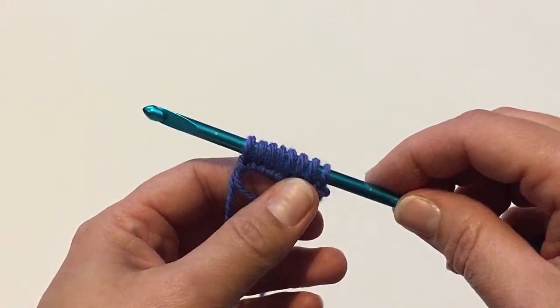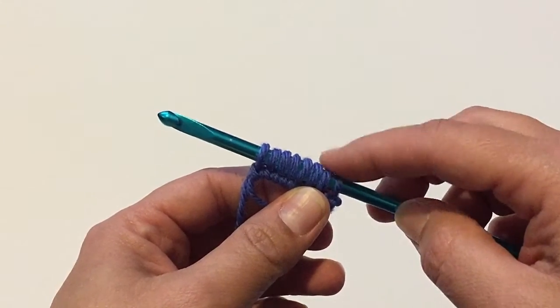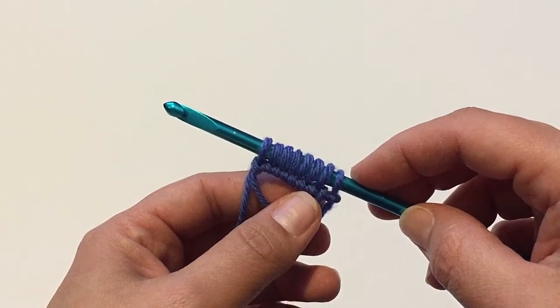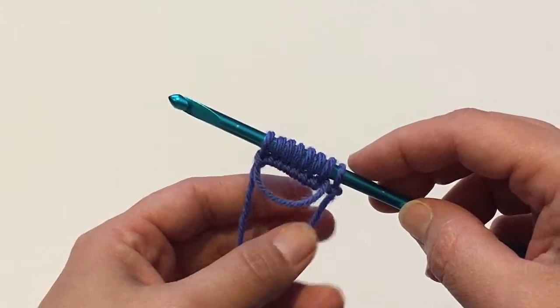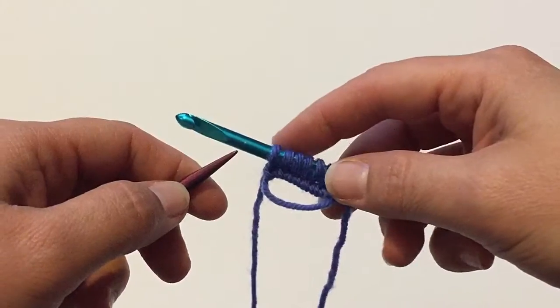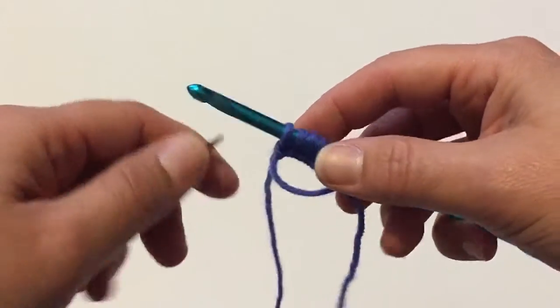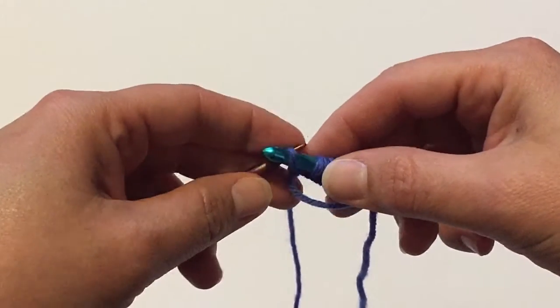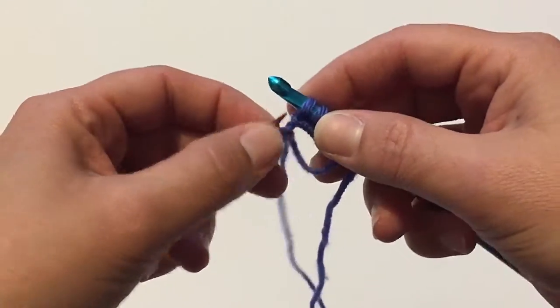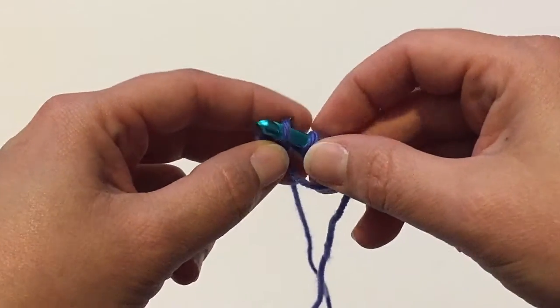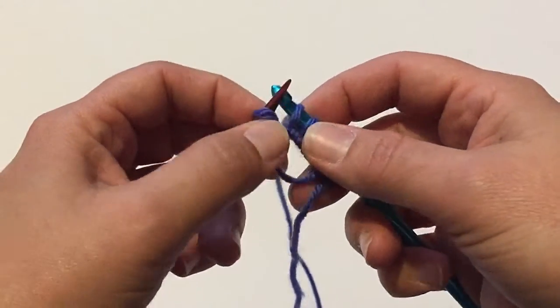The next thing we need to do is transfer these stitches over to our working knitting needles. So if you're using double pointed needles, or magic loop, or the two circular method, go ahead and grab your knitting needles. Now you can transfer the stitches you've cast on to your knitting needles. Just make sure that you are not twisting the stitches.